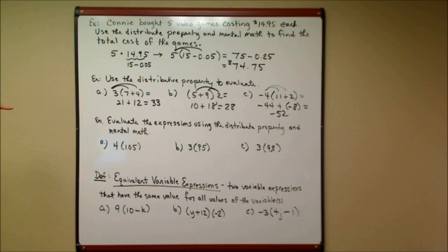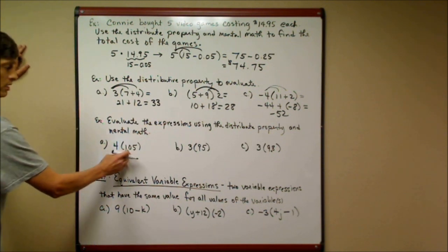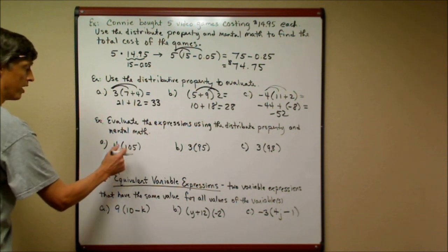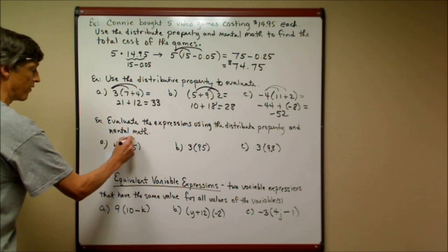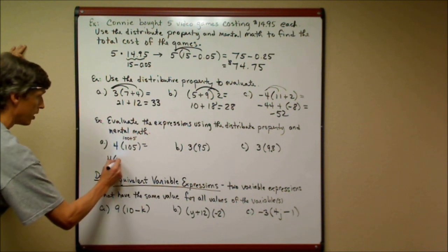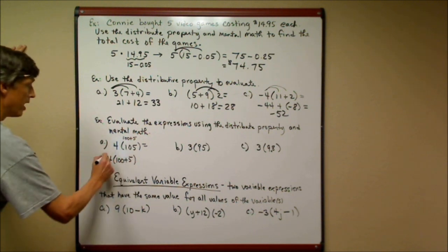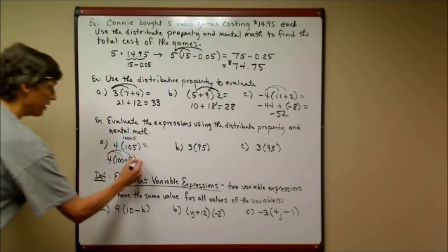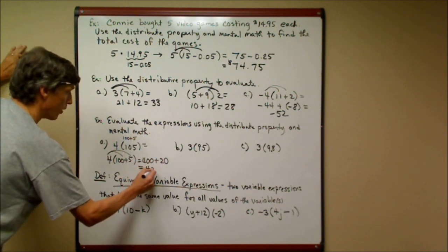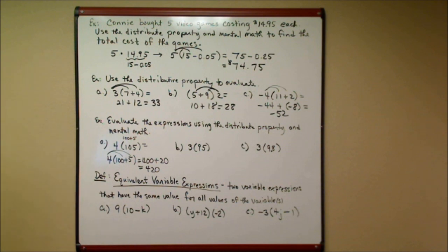Here's another mental math problem: evaluate using the distributive property. For 4 × 105 — since 105 is just a little more than 100, I think of it as 100 plus 5, and write this as four times (100 + 5). Distributing: four hundred plus twenty equals four hundred twenty.